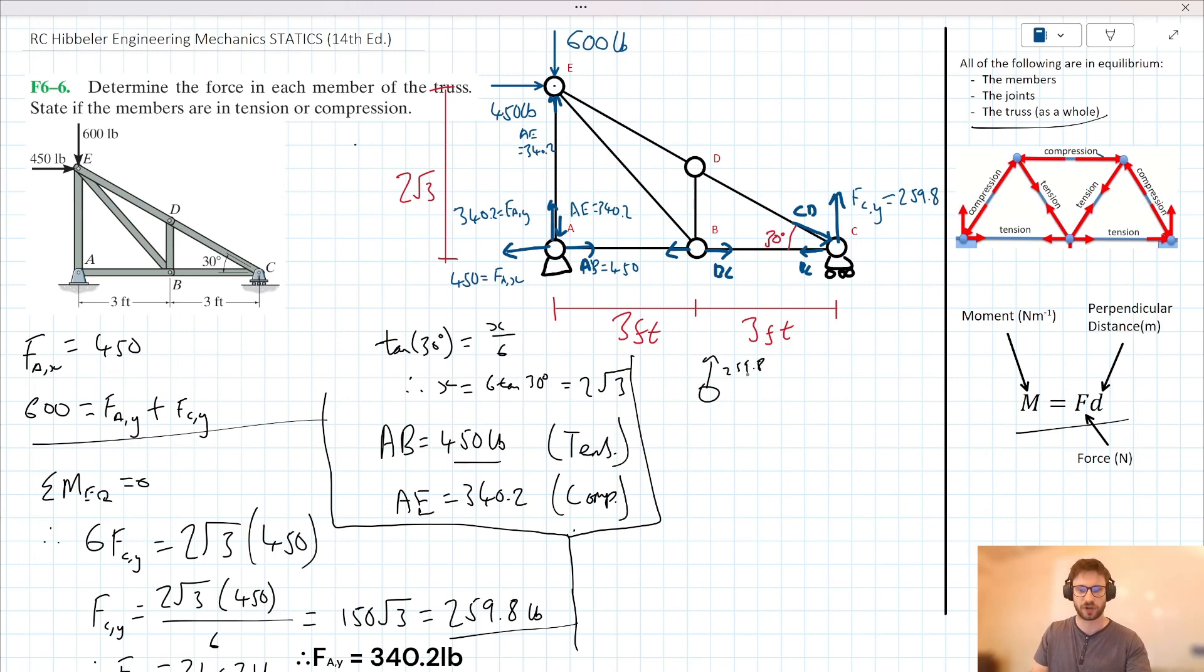So let's just kind of draw a little free body diagram here. We have 259.8 acting up. We have CD acting down and to the left there. And we have BC acting to the right. And we have this 30 degree angle here. We could note the fact that the vertical component of CD here is going to be equal to this 259.8. We could say then, if we are resolving vertically here,